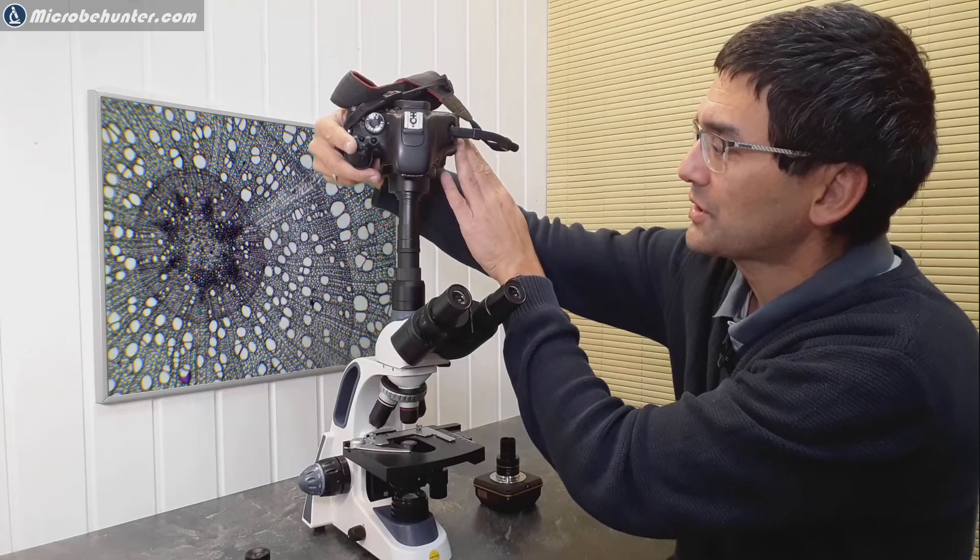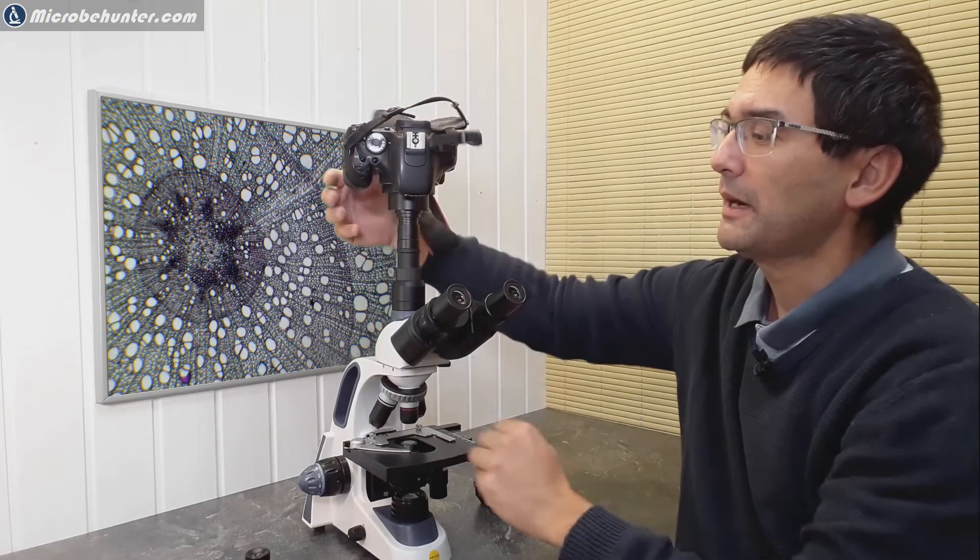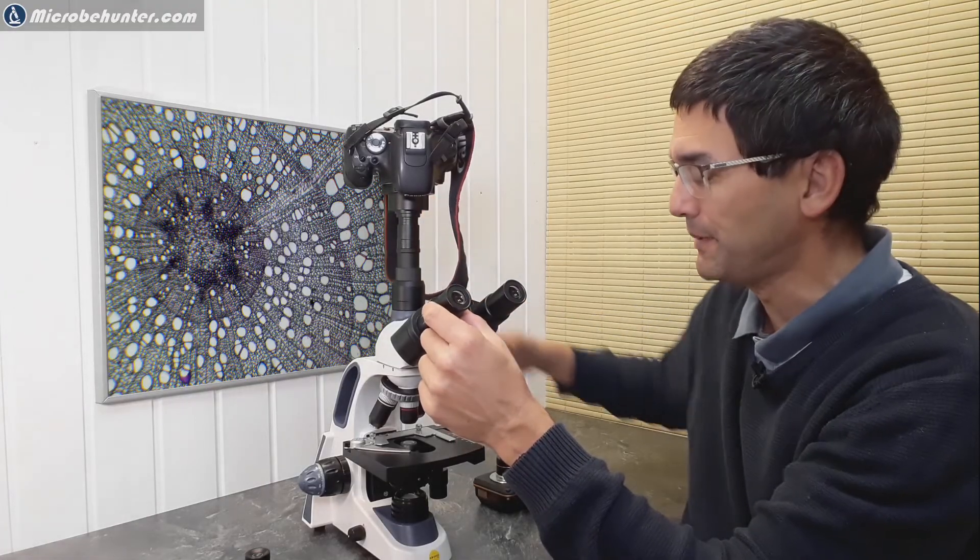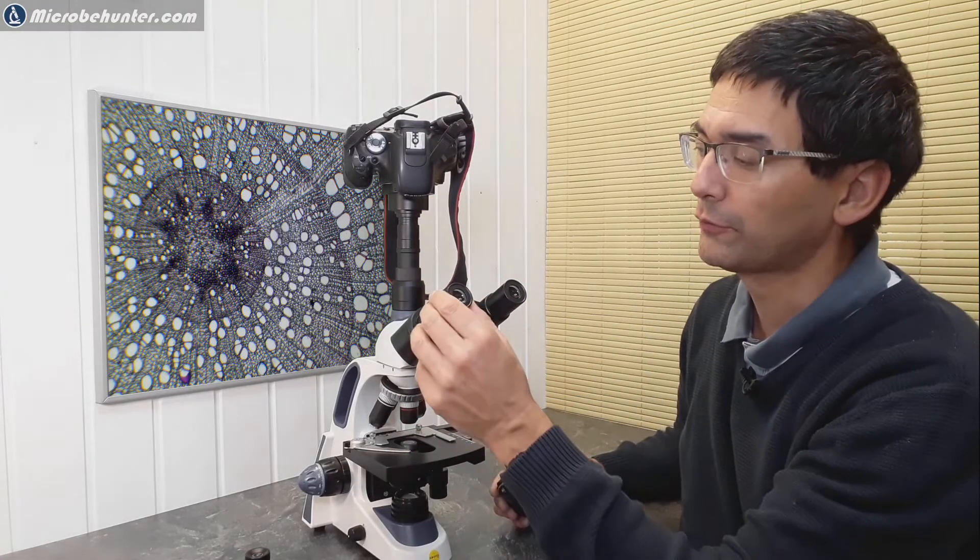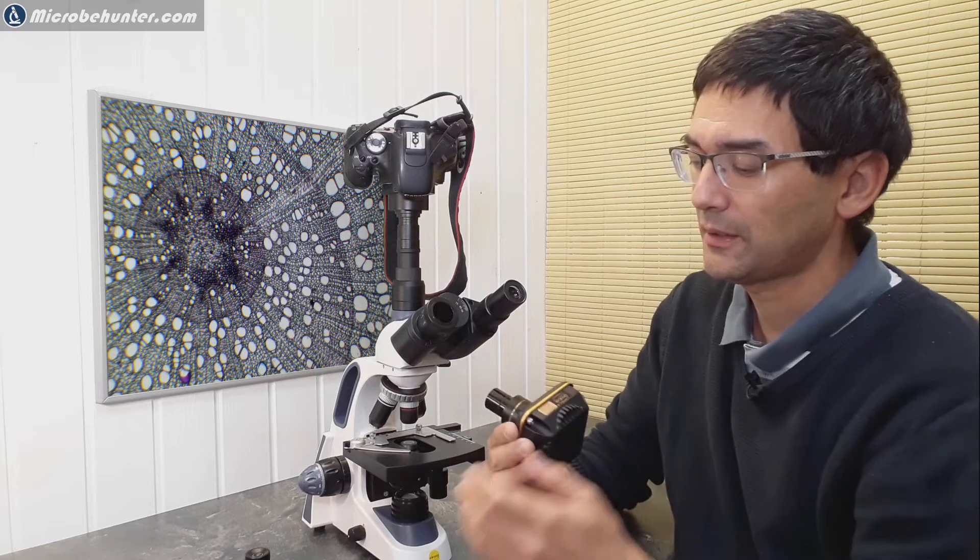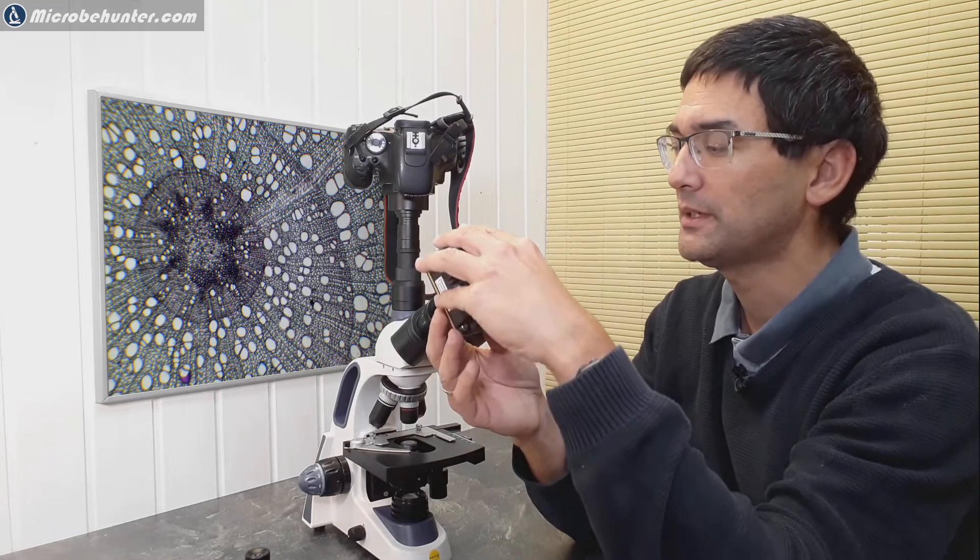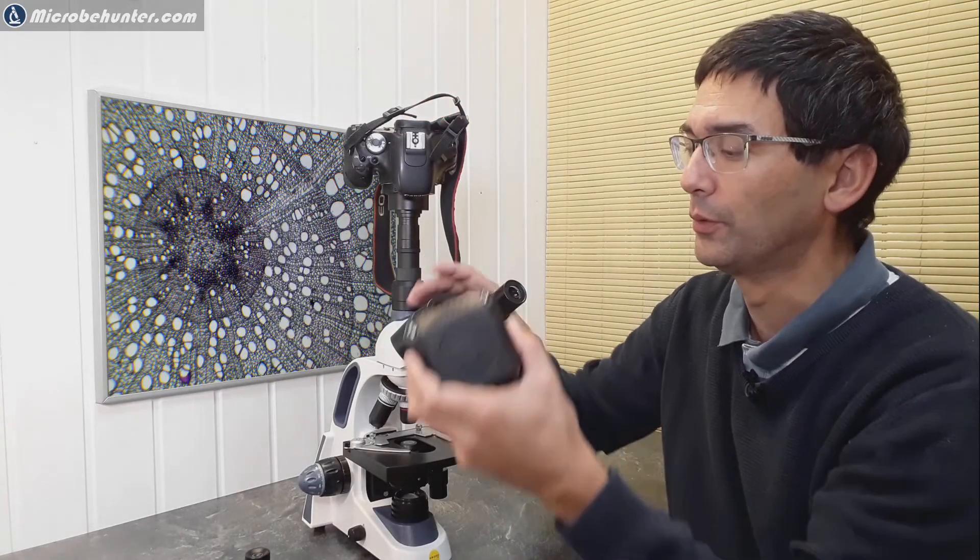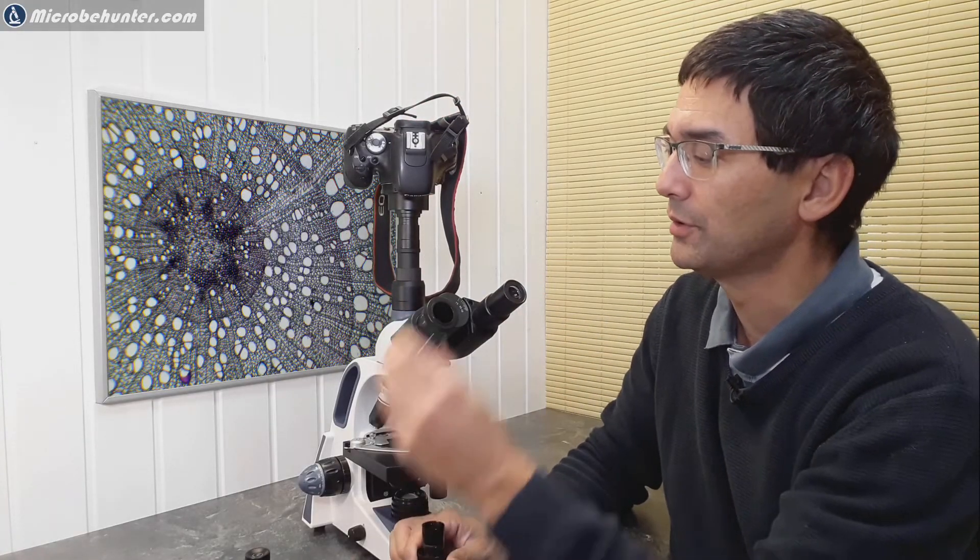Of course it might be a little bit too heavy if you want to connect it instead of one of the eyepieces. If you've got the binocular version, then you can connect the camera also here instead of one of the eyepieces. This of course works, however a DSLR might be a little bit too heavy for the whole thing here.